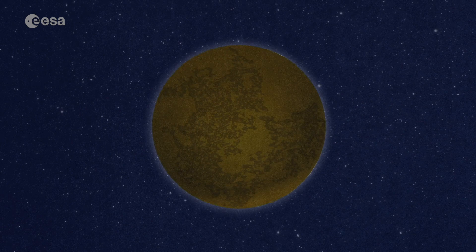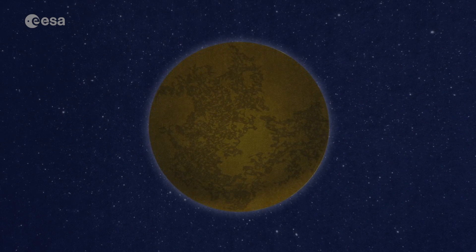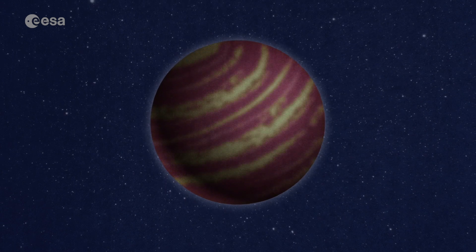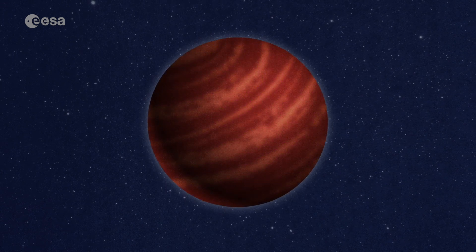A planet's albedo reveals important information about its atmosphere. It can answer questions like: does this planet have clouds? What are they made of? How hot is this world?